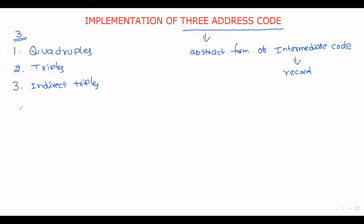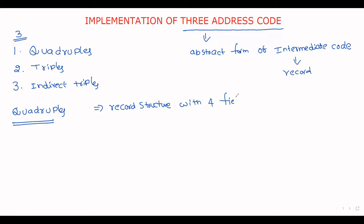We will discuss each with an example. The first one is quadruples. A quadruple is a record structure with four fields. Each and every record consists of four fields: operator, argument one, argument two, and result. The operator field contains the internal code for the operator — that is, which operation is to be performed is specified in the op field.